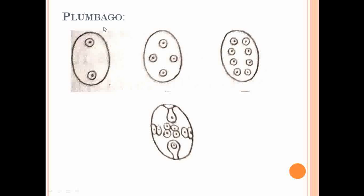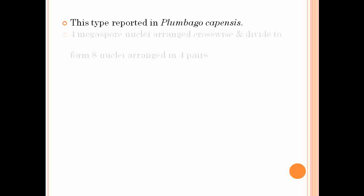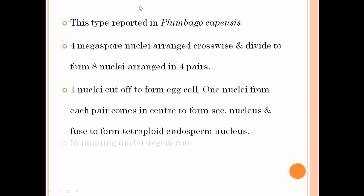The Plumbago type can be 8, 10, or 16 nucleated. It was first reported in Plumbago capensis, which is why it is called the Plumbago type of embryo sac.